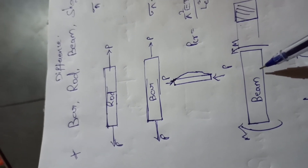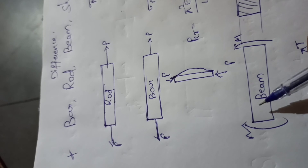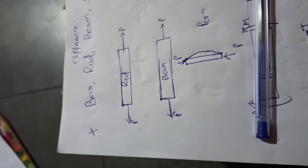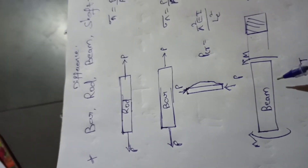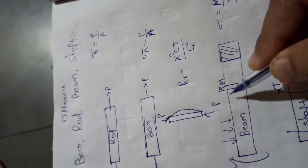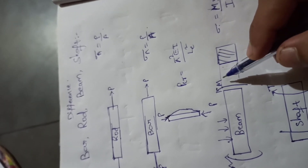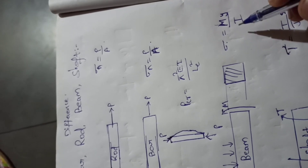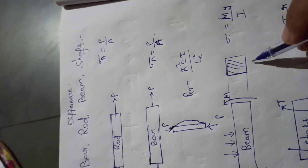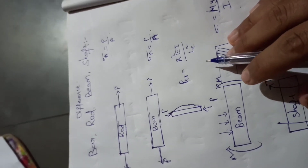A beam is a structural member which takes transverse loads and is subjected to moments. When both ends of the beam are subjected to a moment, or the structural member is subjected to transverse loads as well as moments, the stresses induced are bending stresses. Bending stress is given by M/I × y, where I is the moment of inertia of the cross-sectional area and y is the perpendicular distance from the centroid.